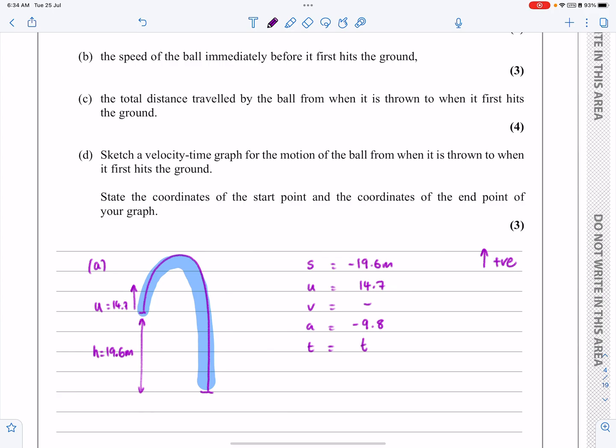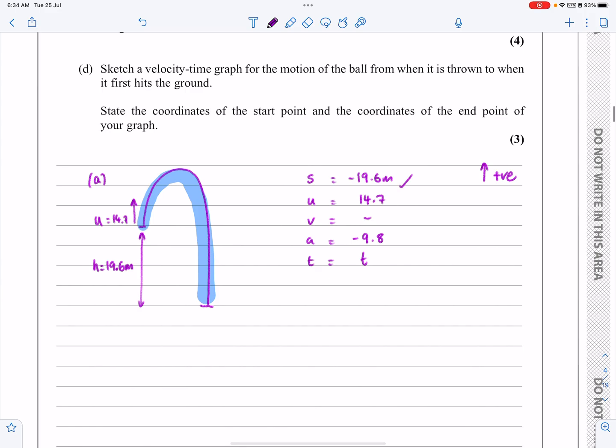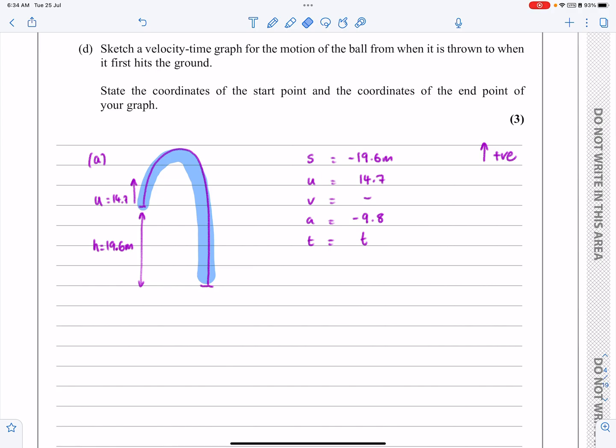So yeah, I've got my classic situation. One, two, three, four variables, three of which I know. So what formula connects S, U, A and T? Well, if you've done any work at all on kinematics, this shouldn't be a problem to you. This is going to be S equals U T plus half A T squared. And then we're simply going to put everything in.